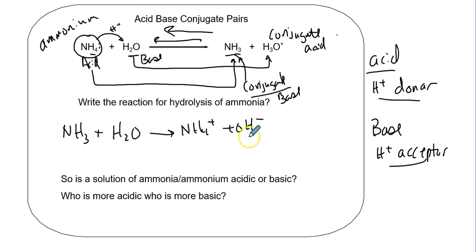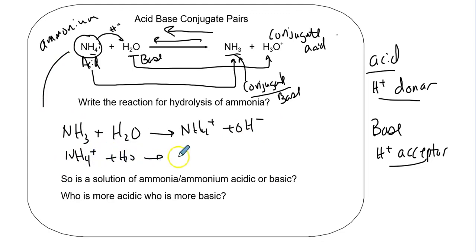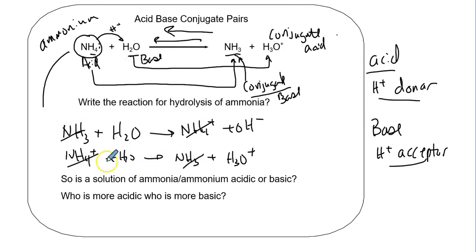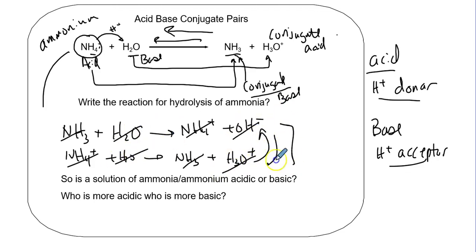If you want to make this look more complicated, you could put the two reactions together: NH4+ plus water yields NH3 plus H3O+. These two reactions going back and forth - some things cancel out. Water is just water, and we get water producing these ions. These guys will annihilate each other and we all just cancel out - they are the reverse of each other.